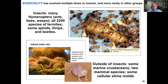Darwin thought about altruism and even hinted at the solution. He said the evolution of sterile castes of social insects represented a special difficulty that appeared insufferable and actually fatal to his whole theory. However, he thought that selection may be applied to the family as well as to the individual — hinting that selection can extend outside of the individual.